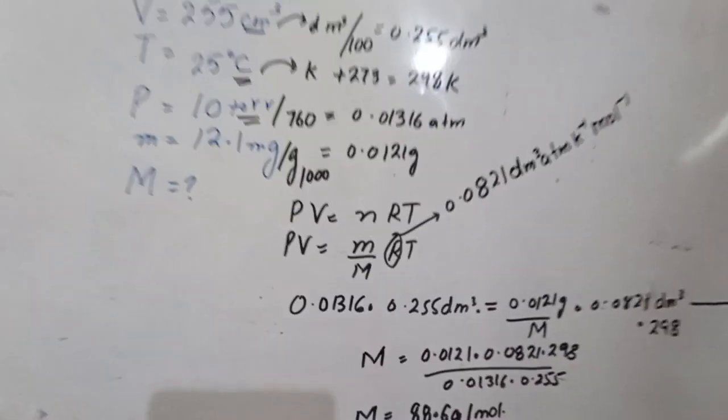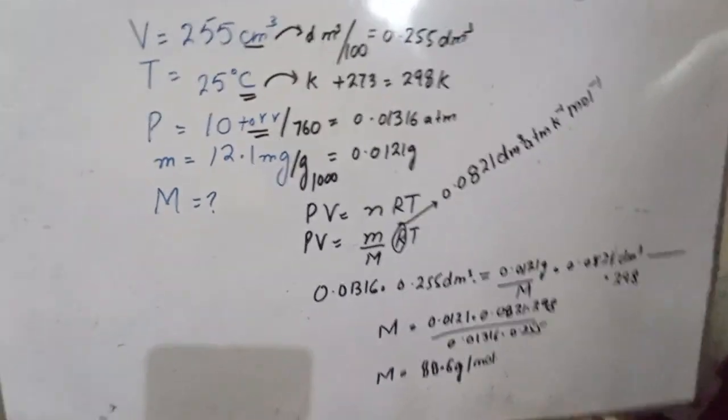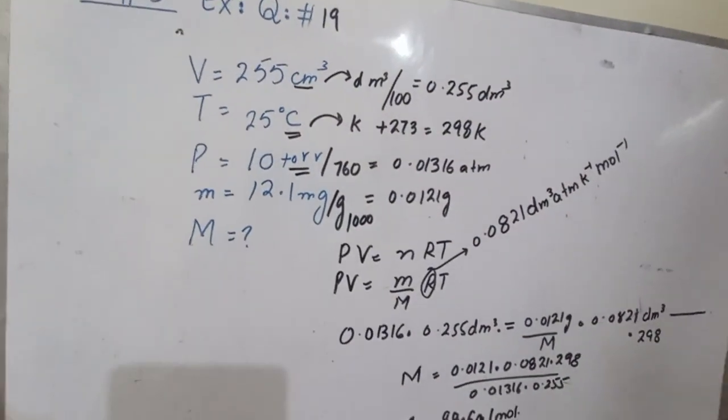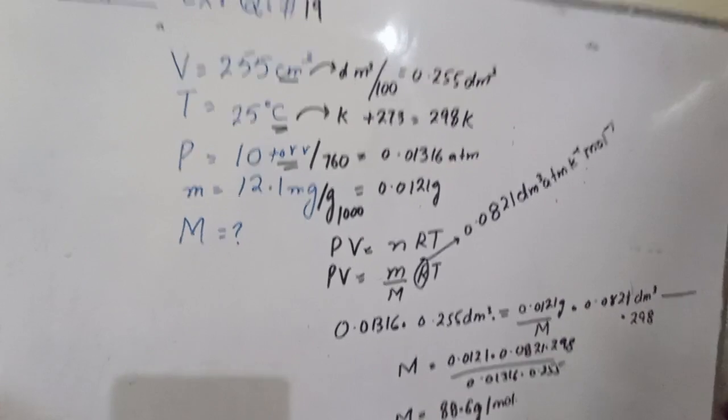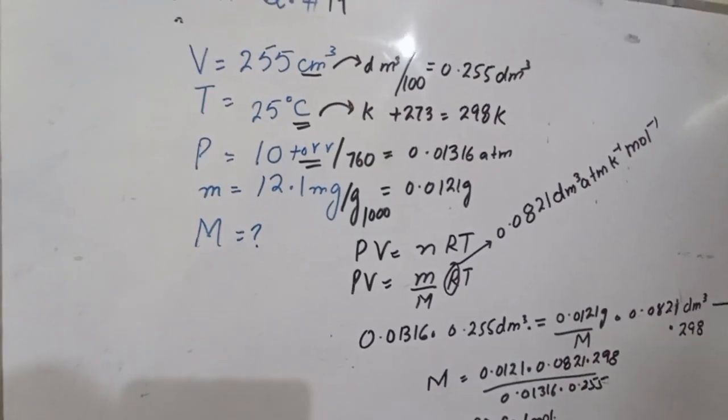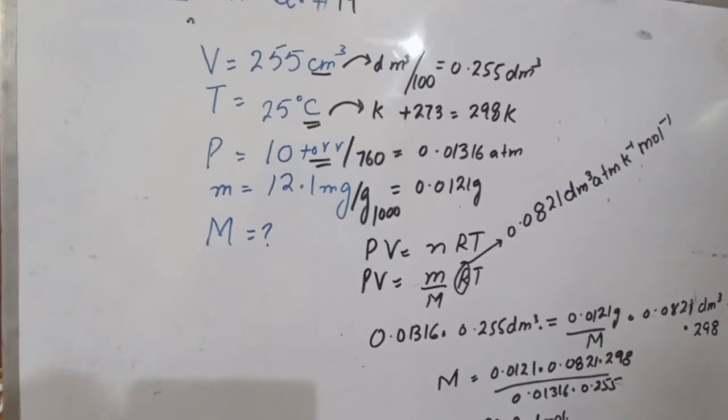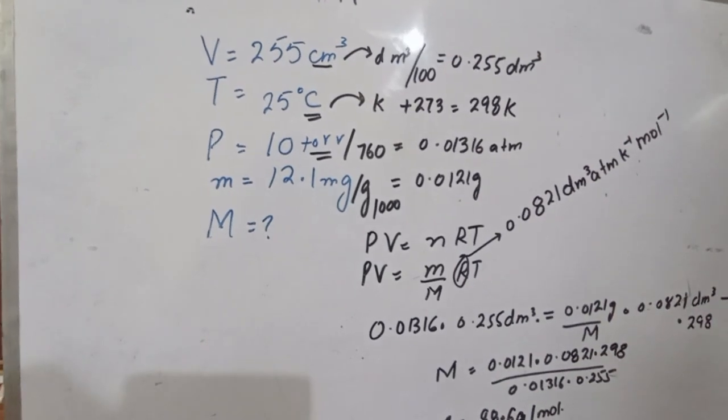The main thing is unit conversions. To find molar mass: convert centimeter cube to decimeter cube, degrees Celsius to Kelvin, torr to atm, and milligrams to grams. Then solve easily.